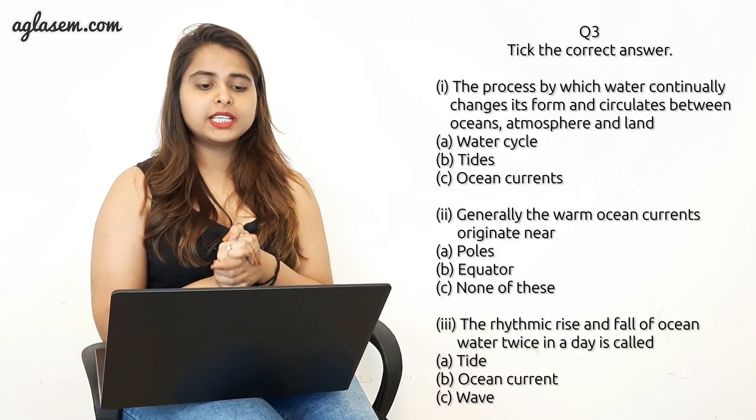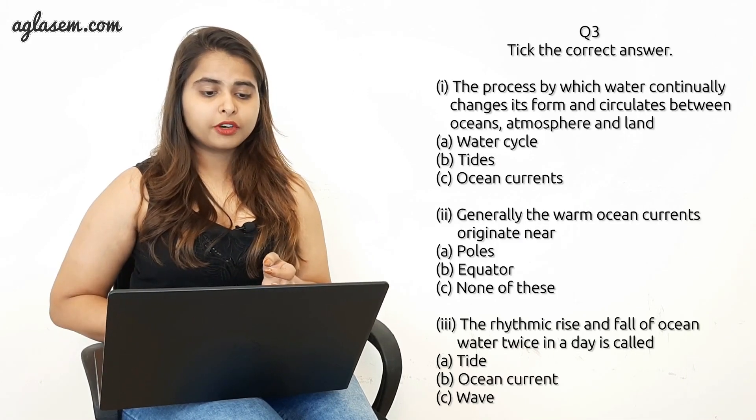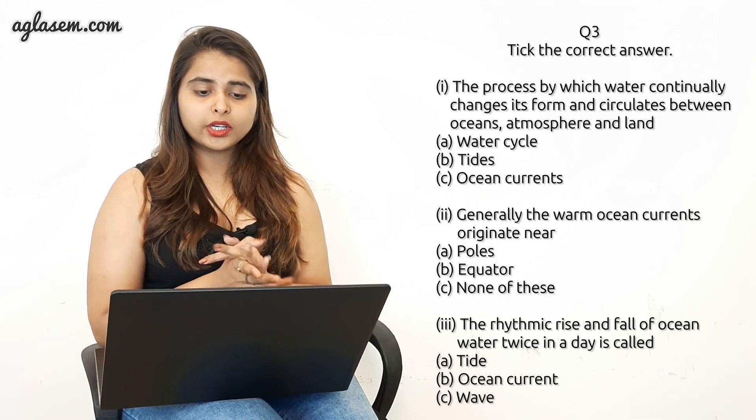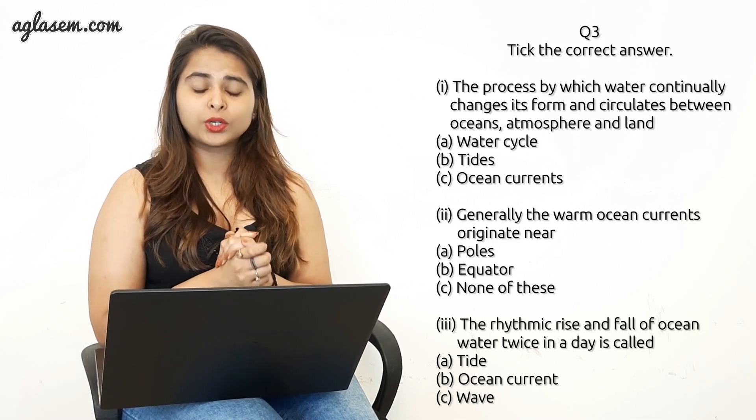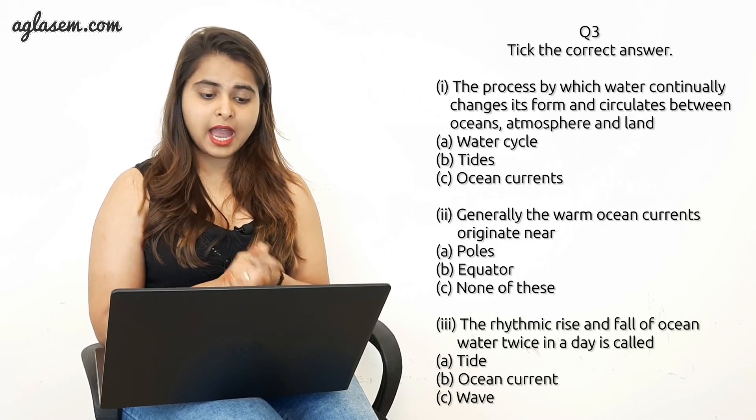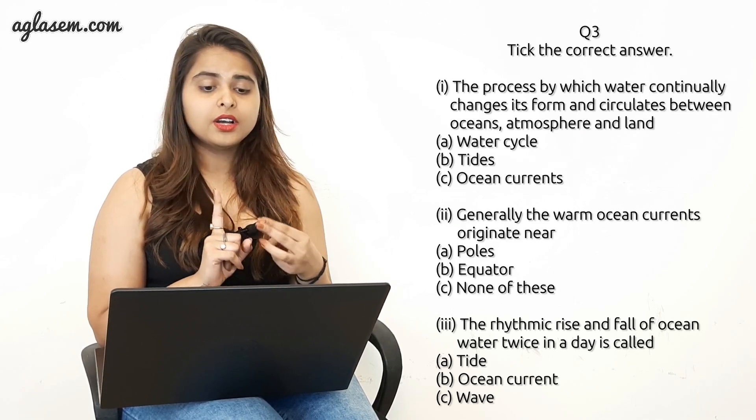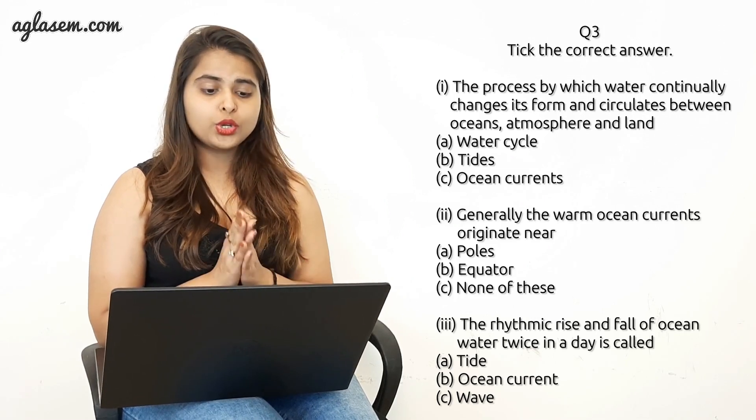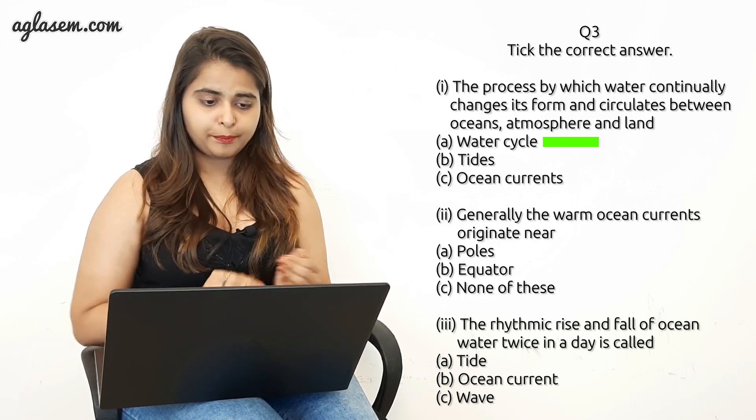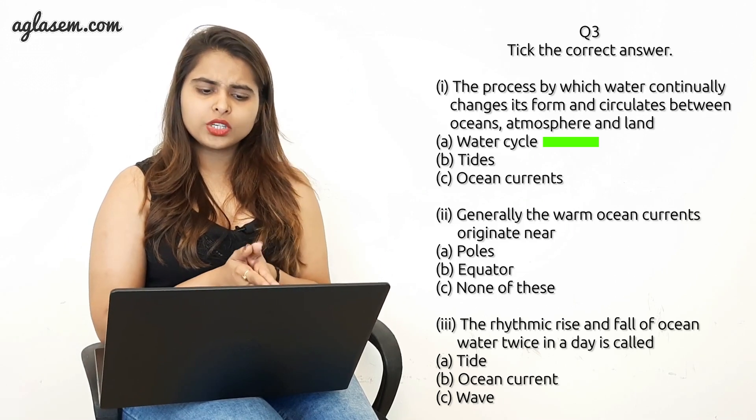Now the third question is tick the correct answer. First part is the process by which water continually changes its form and circulates between ocean, atmosphere, and land: A) water cycle, B) tide, C) ocean currents. Your answer will be A, water cycle. The second part is generally warm ocean currents originate near: poles, equator, or none of these. Your answer will be equator.